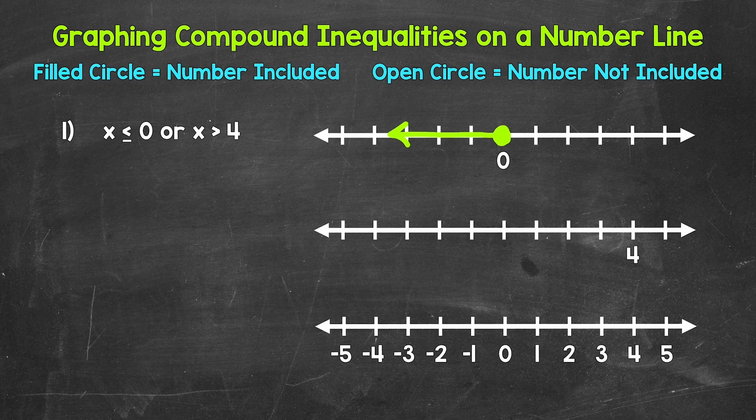Next, we have x is greater than 4. So we need an open circle at 4 — 4 is not included. And then we need an arrow going right representing everything greater than 4. Anything greater than 4 is a solution.